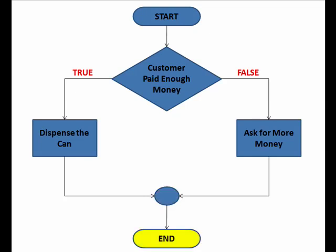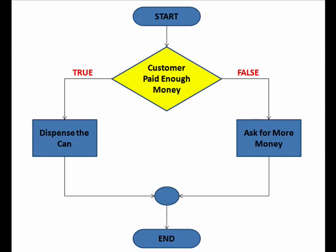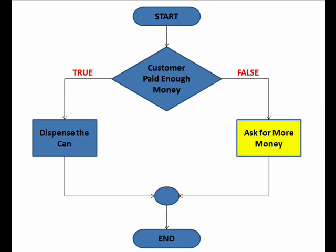But what if we didn't pay enough money? If we restart our logic and once again consider the decision to be made, if we did not pay enough money, we would follow the branch labeled FALSE. The next step would be for the machine to ask for more money. At that point, the decision has been made and our logic comes to a conclusion.